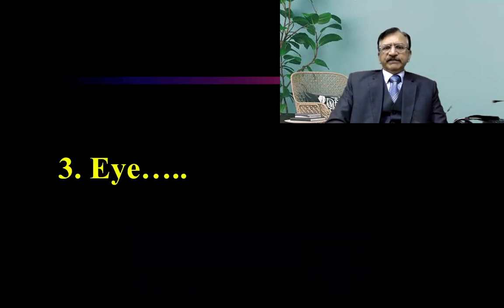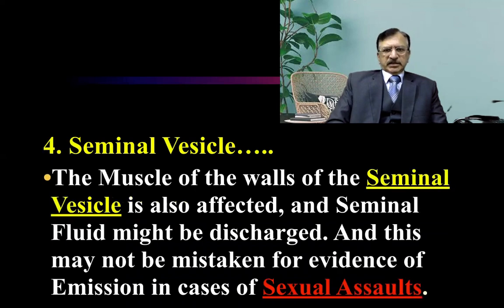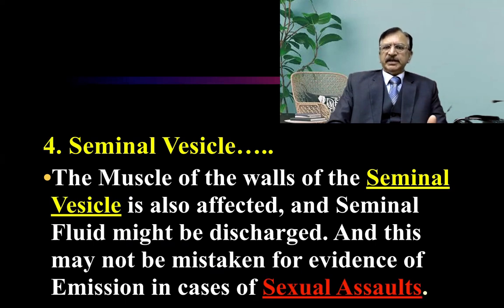Regarding other features: in the eye, rigor mortis affects the iris muscle, resulting in development of irregularity of the pupil. In the seminal vesicle, contraction of the seminal vesicle muscles causes emission of seminal fluid, and this should not be mistaken for evidence of emission of semen due to sexual assault.